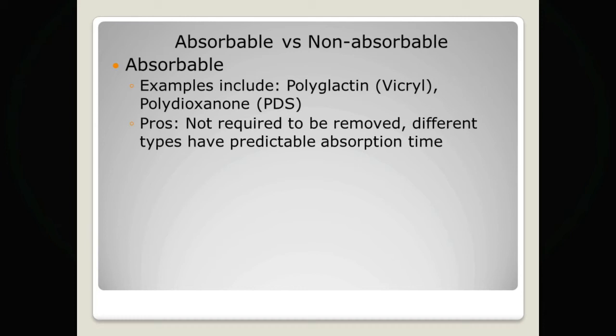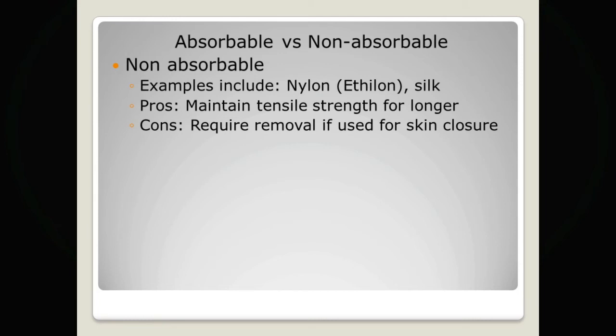Non-absorbable sutures include nylon and silk. The pros of these sutures are that they maintain their tensile strength for longer than absorbable sutures. Of course, if you are using a non-absorbable suture to close a skin wound, those sutures will need to be removed, as they won't be broken down by enzymatic action the way absorbable sutures are.